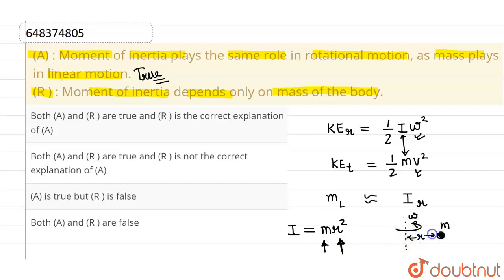So it depends on r as well as m. So this given reason that it depends only on mass of the body is false. So correct option is A is true and R is false, and rest all options are incorrect.